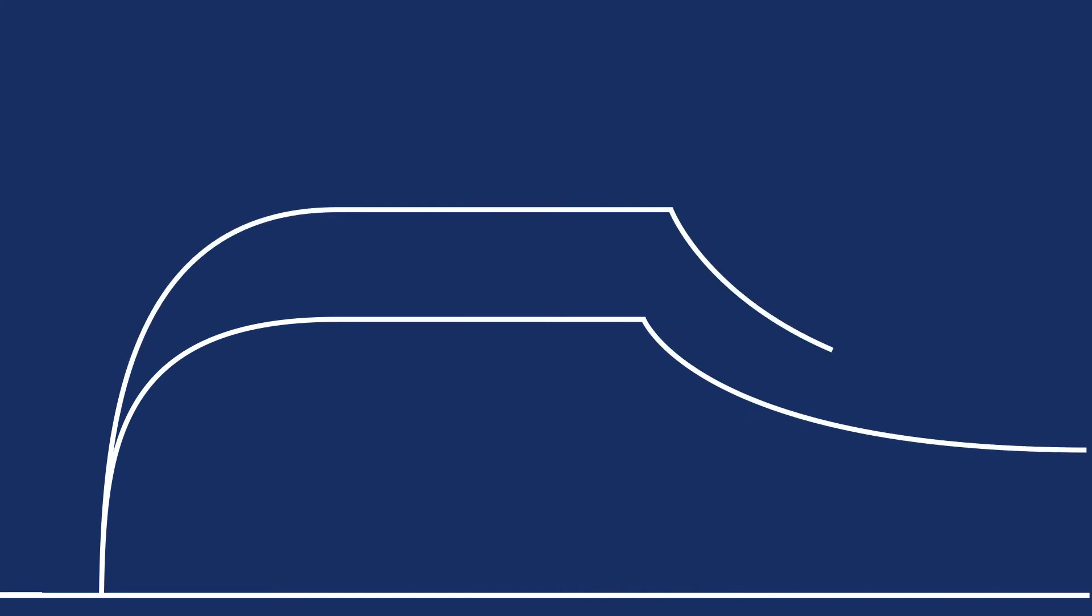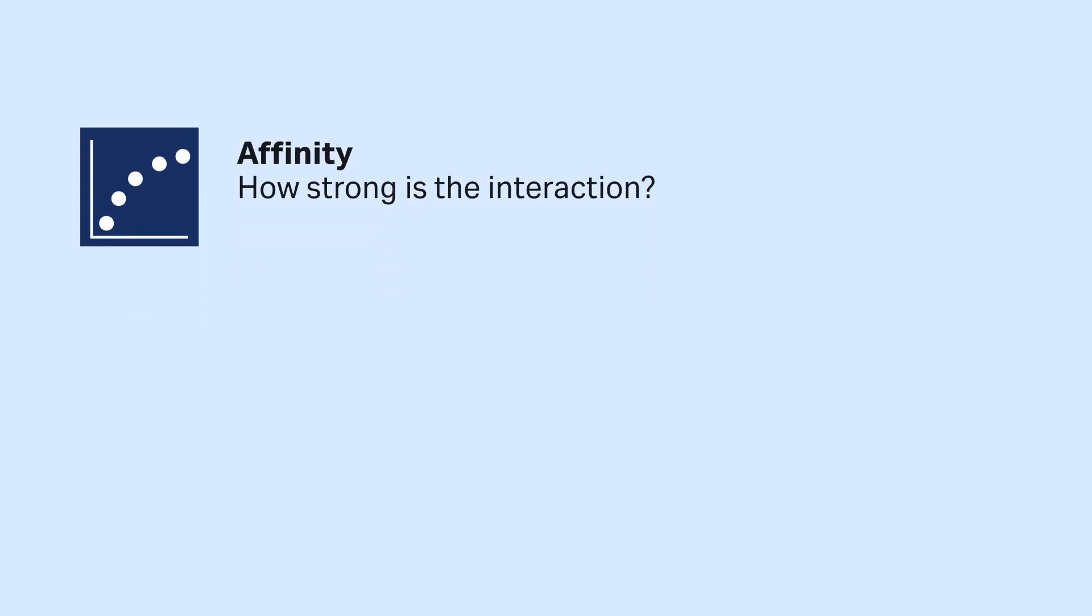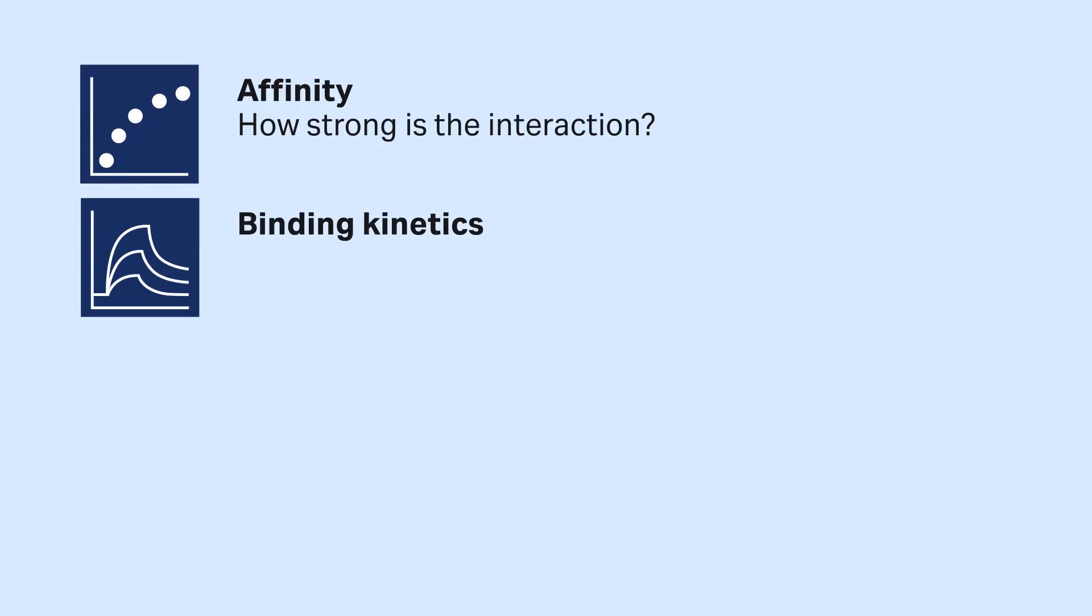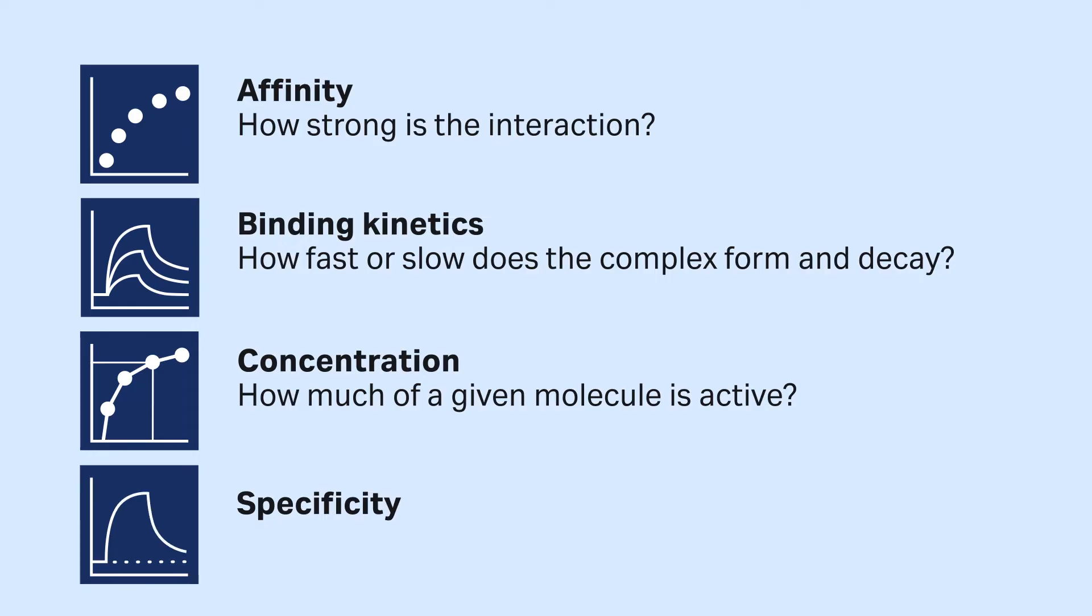Using SPR, you can study many different aspects of an interaction. These include affinity: How strong is the interaction? Binding kinetics: How fast or slow does the complex form and decay? Concentration: How much of a given molecule is active? Specificity: How specific is the interaction?